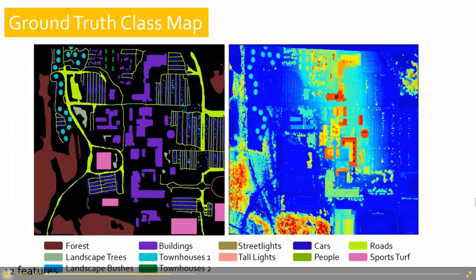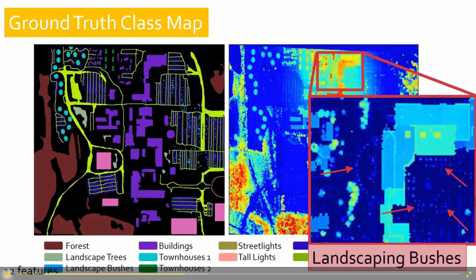These are the classes we used — this is the ground truth. We have three types of vegetation: forest, landscape trees, and landscape bushes. Three types of buildings: buildings, townhouses one, and townhouses two. Two types of lights: street lights and tall lamps. Cars and people are also included, which are very similar to each other. And then roads and sports turf, which are also fairly similar. So we're getting into quite nitpicky differences.